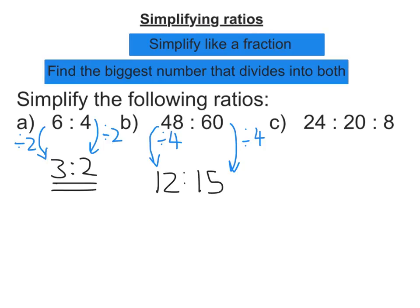Now let's look at 12 and 15. We know that 3 divides into both, so 12 divided by 3 is 4, and 15 divided by 3 is 5. So 4 to 5.